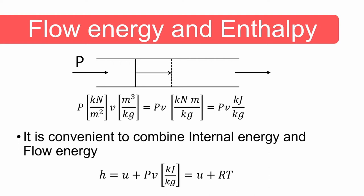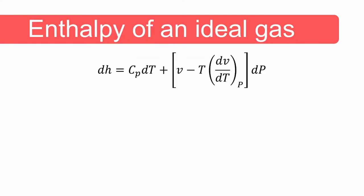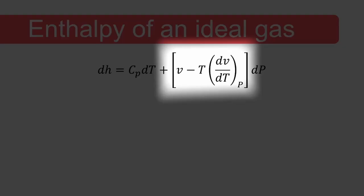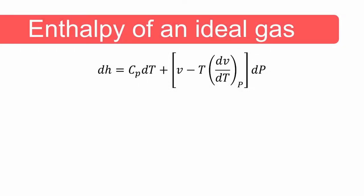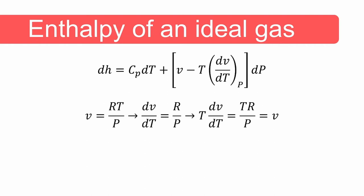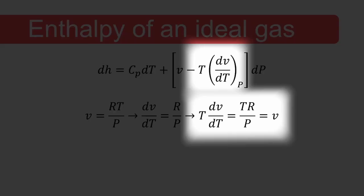Enthalpy is an intensive variable. For an ideal gas, the equation used to calculate enthalpy shows that the term in square brackets reduces to zero, and the enthalpy of an ideal gas is only dependent on temperature. For an ideal gas, specific volume equals RT divided by P. Therefore, the differential dv/dT equals R divided by P, and T multiplied by dv/dT equals TR divided by P, which is also equal to specific volume. And that specific volume subtract specific volume equals zero.